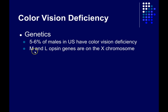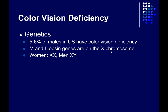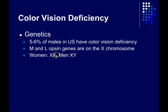The medium and long opsin genes, the ones that code for the protein part of the photopigments, are both on the X chromosome. Hopefully you remember that women have an XX chromosome pattern and men have an XY chromosome pattern for their sex chromosomes.